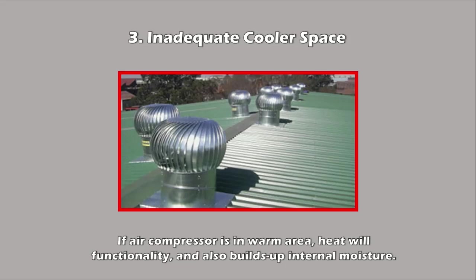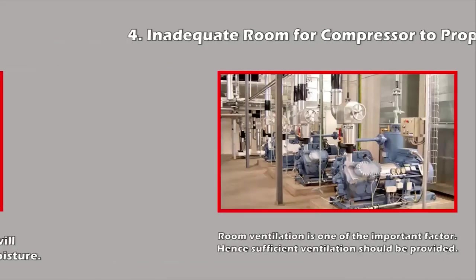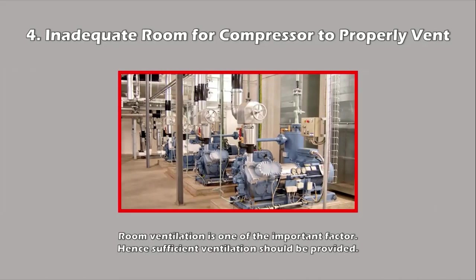Another concern closely related to temperature is whether there is adequate room for the compressor to properly vent. Can the machine sufficiently ventilate, or are the vents blocked or cramped? If the placement of the machine is such that the vents are faced directly against a wall, the air compressor should be turned or possibly moved to another area. If the room where the air compressor is located lacks sufficient ventilation, the stuffiness and warmth of the interior air could rob the machine of needed coolness.